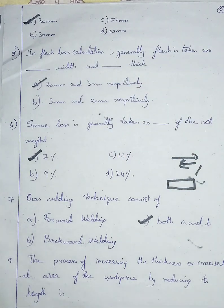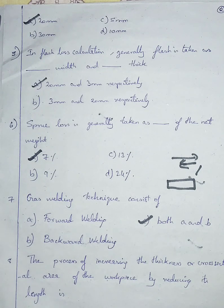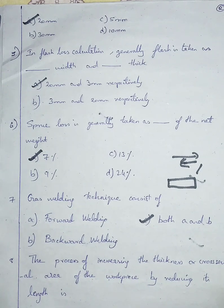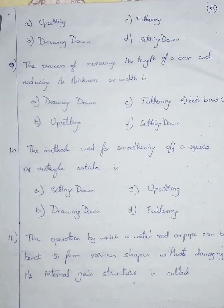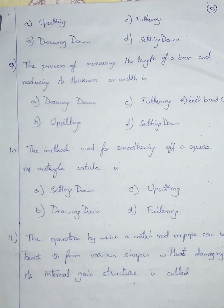Question number eight: the process of increasing the thickness or cross-sectional area of a workpiece by reducing its length is — options: A upsetting, B drawing down, C fullering, D setting down. The process of increasing the thickness by decreasing its length is called upsetting.